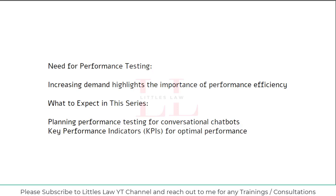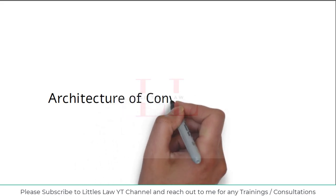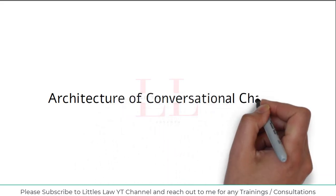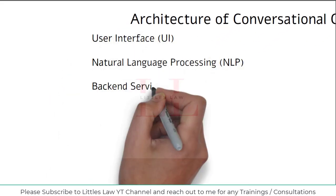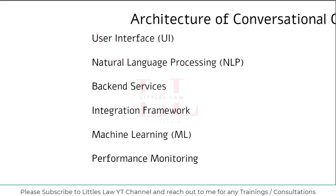Now we'll look at the architecture of the conversational chatbot. First, we have the user interface — the front-end element that users interact with, typically presented through a chat window on a website, mobile app, or messaging platform. Features include text input fields, buttons, quick replies, and multimedia options such as emojis, images, and videos. A well-designed UI enhances user experience by providing an intuitive and engaging way to communicate with the chatbot.